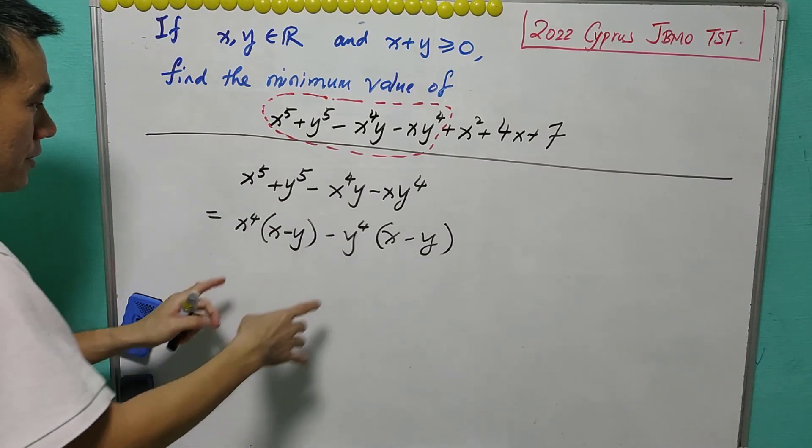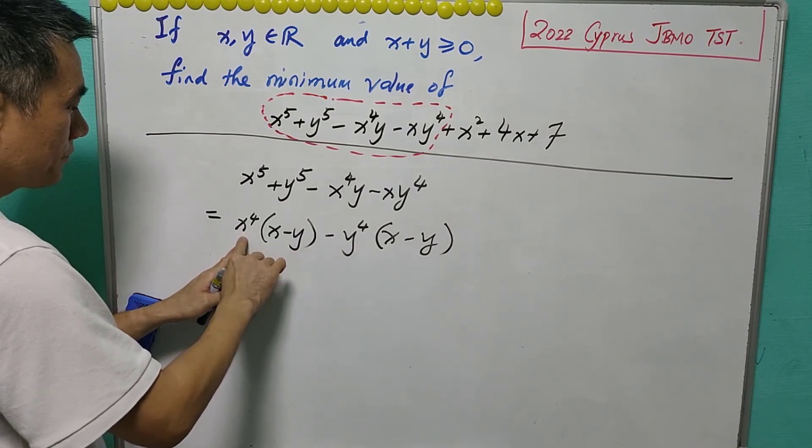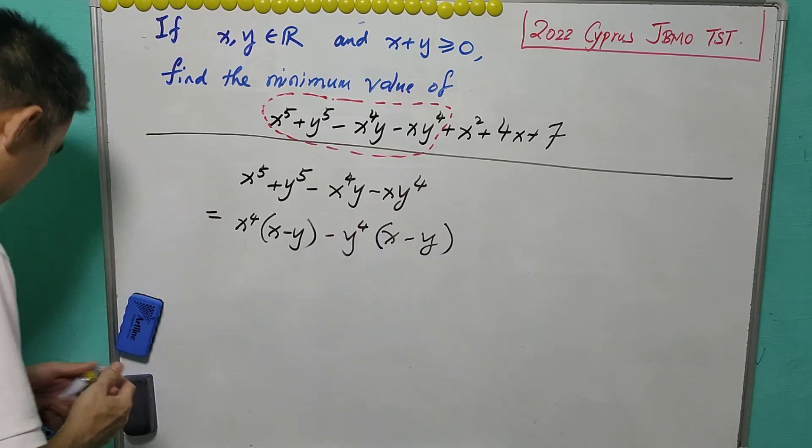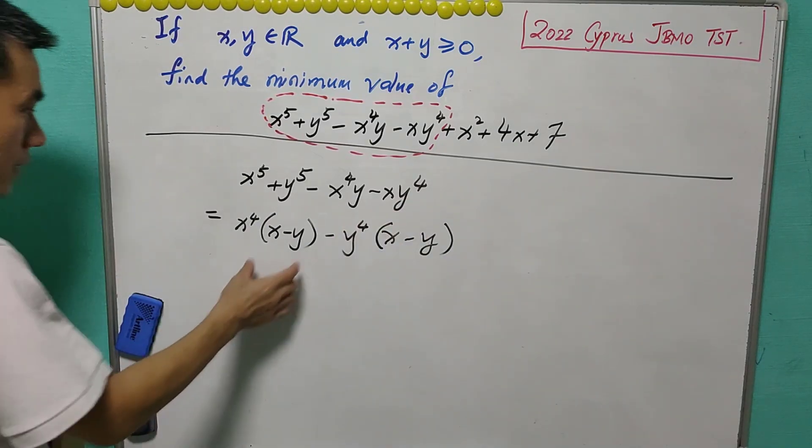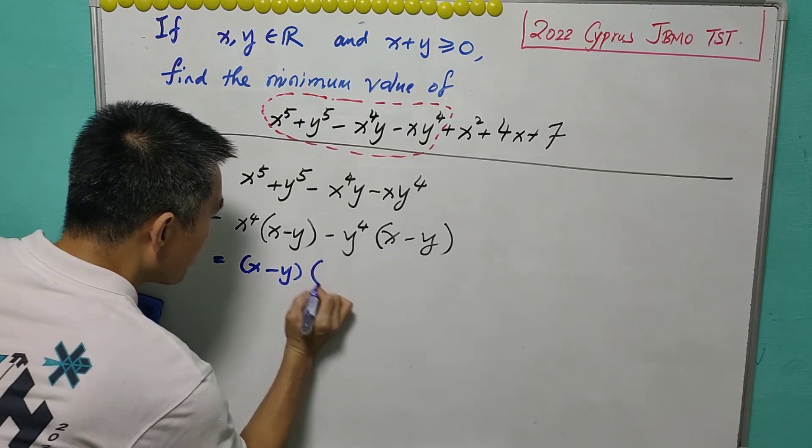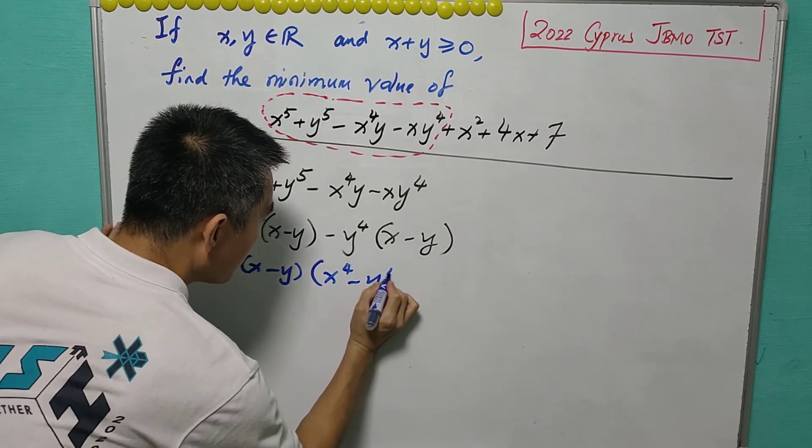If you are not convinced about this, you can actually expand it and you see that you get back the previous expression. So now x minus y is a common term. We can write x minus y, x^4 minus y^4.